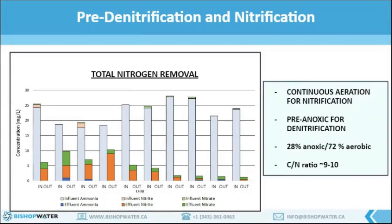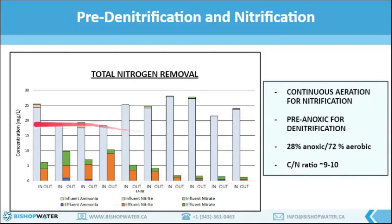Here are the results of BioCore reactors operating under pre-anoxic conditions. The lighter bars on the left show the fractionation of total nitrogen in the influent, mainly composed of ammonia, and the colorful bars on the right show total nitrogen at the outlet. With this configuration we were also able to achieve a high percentage of total nitrogen removal. Samples of biofilm collected from both the aerobic and the anaerobic reactors showed that denitrifiers were more present under anoxic conditions, as expected. From an operational point of view, we were able to easily operate the system by recirculating back the nitrate and maintaining an adequate carbon-to-nitrogen ratio of around 9 to 10.